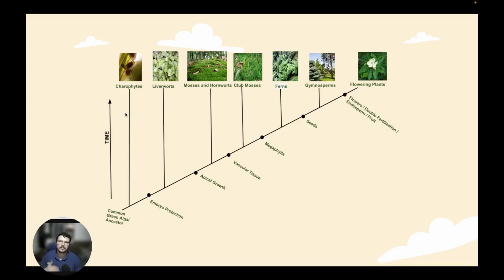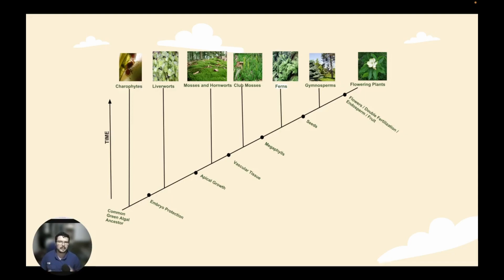Closer they are to the common green algal ancestor, the further back in time it is. As we move up in the chart, the more recently in time it is. We have our common green algae ancestor down here on the bottom left. After the common green algae ancestor, we would have had the carophytes, which would have been things very similar to algae, not capable of supporting themselves or having stems and leaves in the fashion that we think of. After the carophytes, we basically would have created embryo protection.